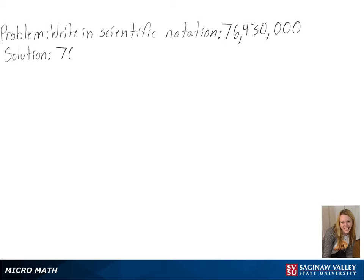Our problem is to write in scientific notation. The first part of our solution is to move the decimal in between the first two numbers. Since we are moving it seven times, we will be multiplying our number by 10 to the 7th power.